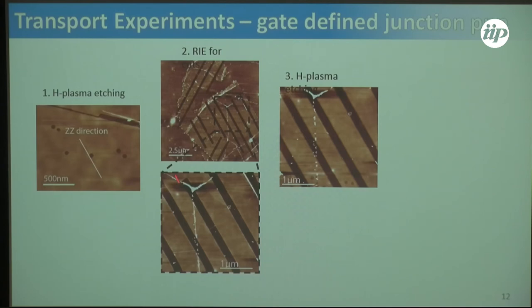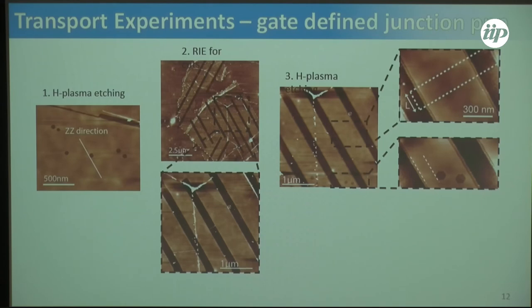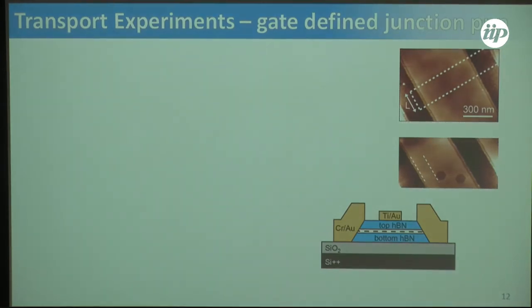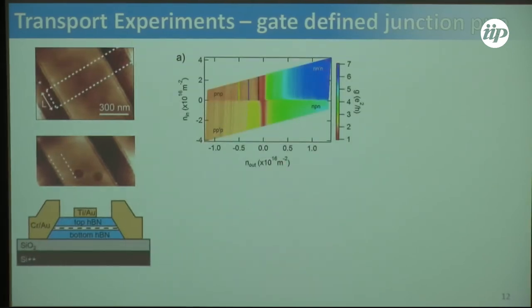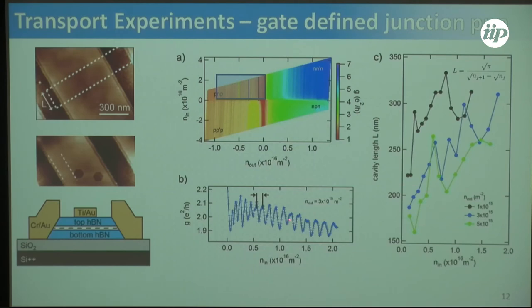With this analysis we also performed electronic measurements. We first figure out the zigzag direction, then define trenches in that direction to make nanoribbons a few hundred nanometers wide. After plasma exposure these ribbons shrink a little. We put a gate over it to form a p-n junction with side contacts, using encapsulated graphene with bottom and top hexagonal boron nitride — giving the highest mobilities. A typical p-n junction signal is visible from top and back gate; due to finite size, states bounce to form a Fabry-Pérot cavity, and the oscillations are consistent with a roughly 300-nanometer gate length.